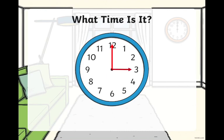Let us do another example. Here, the minute hand is pointing at the 12, and the hour hand is pointing at the 3. Can you guess what time it is? It is 3 o'clock.